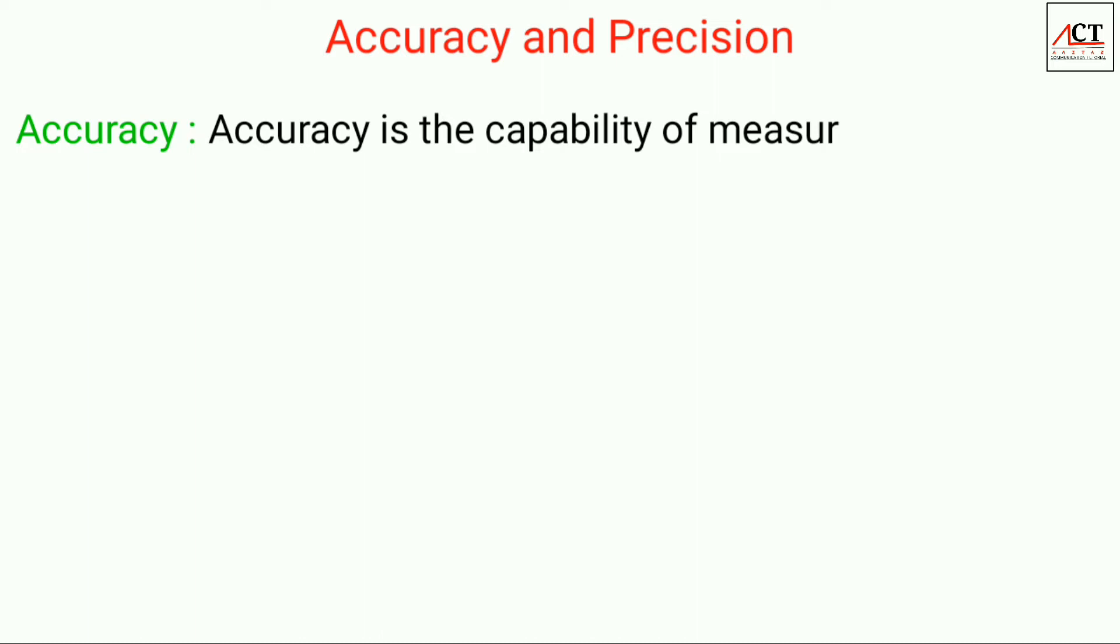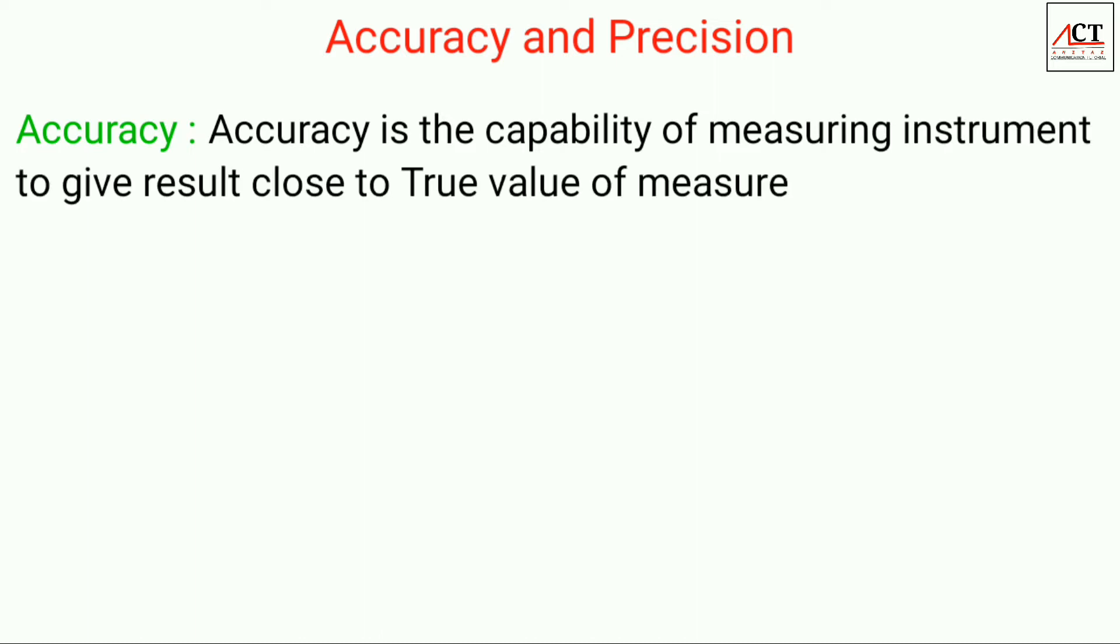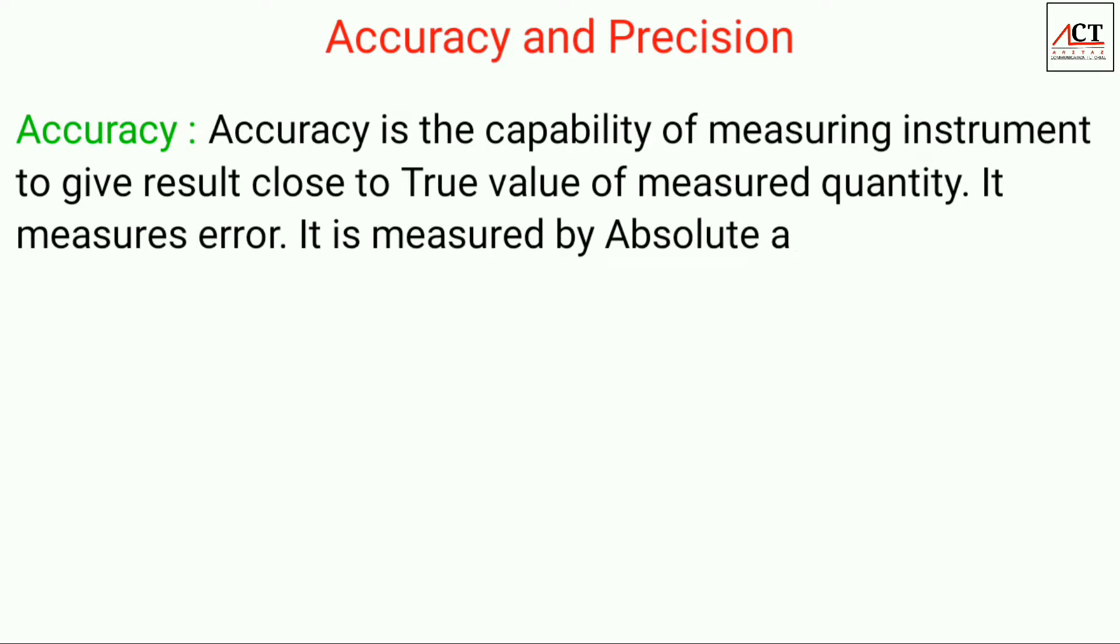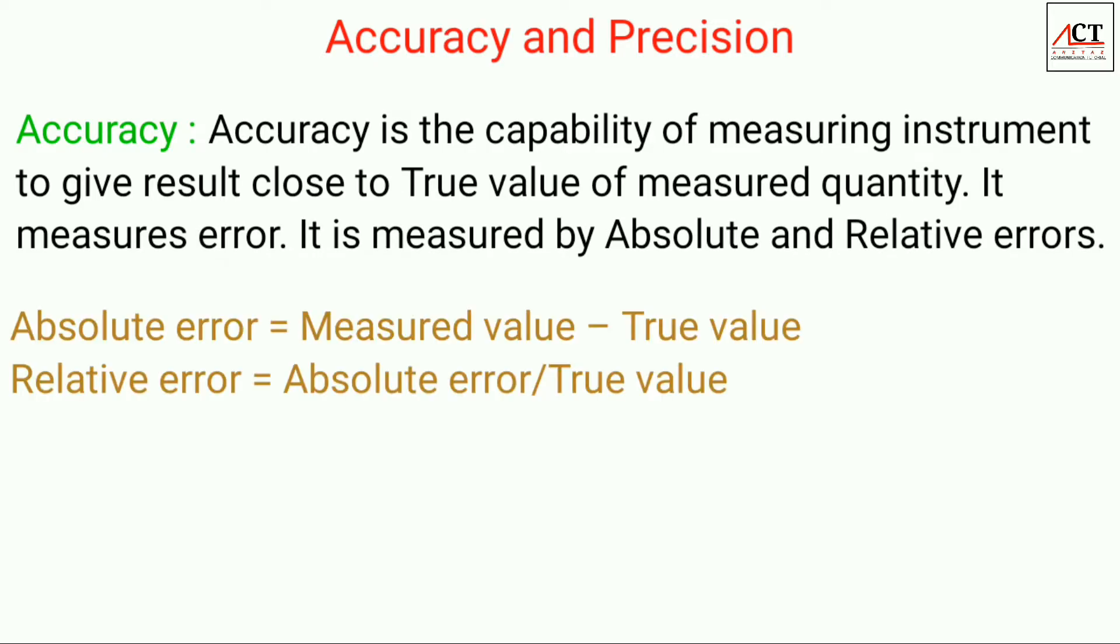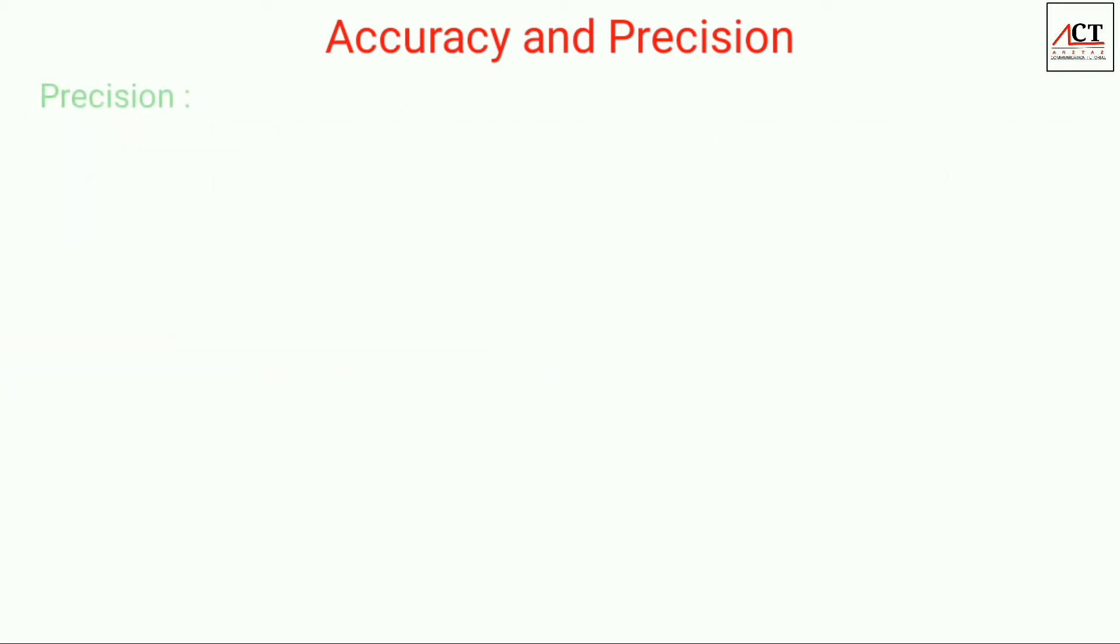Here comes the first static characteristic, accuracy and precision. Accuracy is the capability of the measuring instrument to give a result close to the true value of the measured quantity. It generally measures error. It is measured by absolute and relative errors. Absolute error is given by measured value minus true value, and relative error is given by absolute error upon true value.